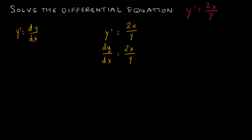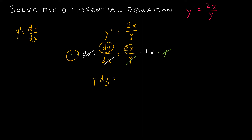I want all the y's on one side and all the x's on the other. So I'll multiply each side by dx — that gets rid of the dx on the left — and multiply each side by y — that gets rid of the y on the right. What I have left is y dy on the left and 2x dx on the right. Really, all I did was cross multiply.